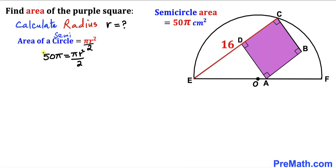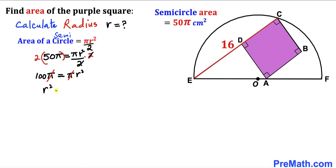Multiply both sides by 2: on the left we get 100π, and on the right we get πr². The π cancels on both sides, leaving us with r² = 100.